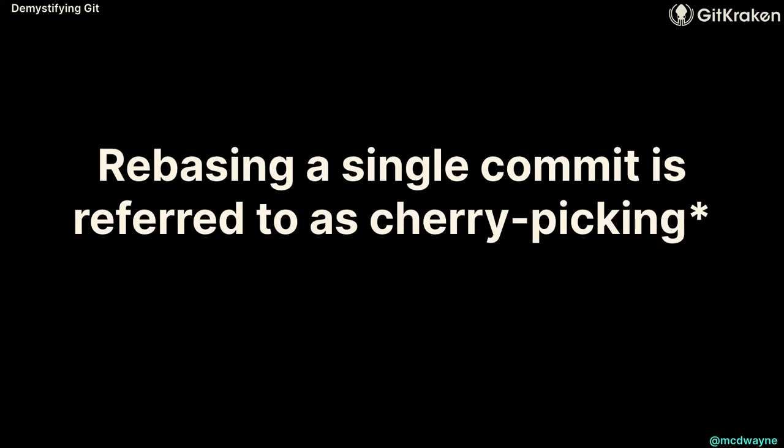If you rebase a single commit, that's called cherry-picking. You can cherry-pick however many you want. Have you ever committed to the wrong branch? Just cherry-pick it over to the right one and you're good to go. It's not some magical graph rewriting — you're literally just changing where pointers are in a spreadsheet, and Git doesn't care.